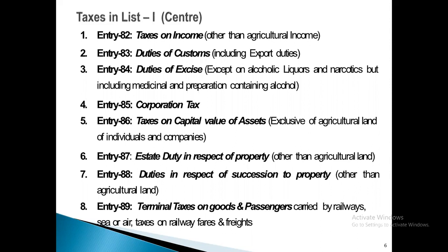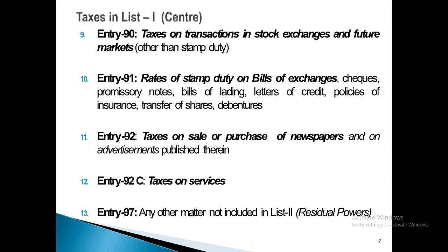Entry 86 covers taxes on capital value of assets of individuals and companies, exclusive of agricultural land. Entry 87 covers estate duty in respect of property other than agricultural land. Entry 88 covers duties in respect of succession of property other than agricultural land. Entry 89 covers terminal taxes on goods and passengers carried by railway, sea, or air, and taxes on rail fares and freight. Entry 90 covers taxes on transactions in stock exchanges and futures markets other than stamp duty.